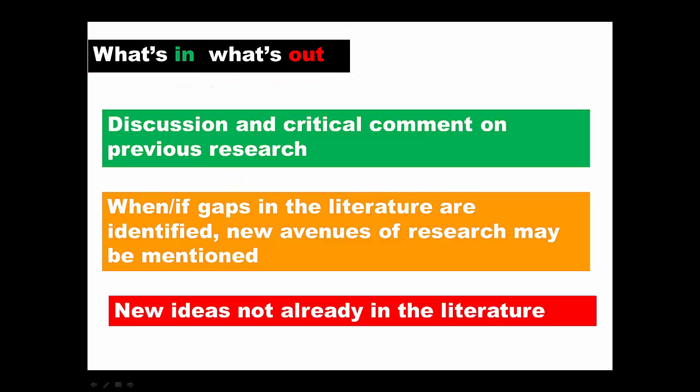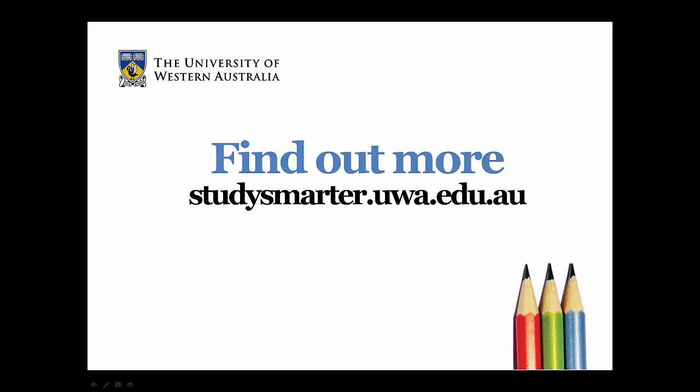So, to recap. In your literature review, include discussion and critical comment on previously published research. Identify the gaps in present research and what new avenues of research have been suggested. Identify what you will pursue. Don't include new ideas or information not already in the literature — that's what your research will investigate. You can get more study tips and advice on the Study Smarter website, brought to you by UWA Student Services.